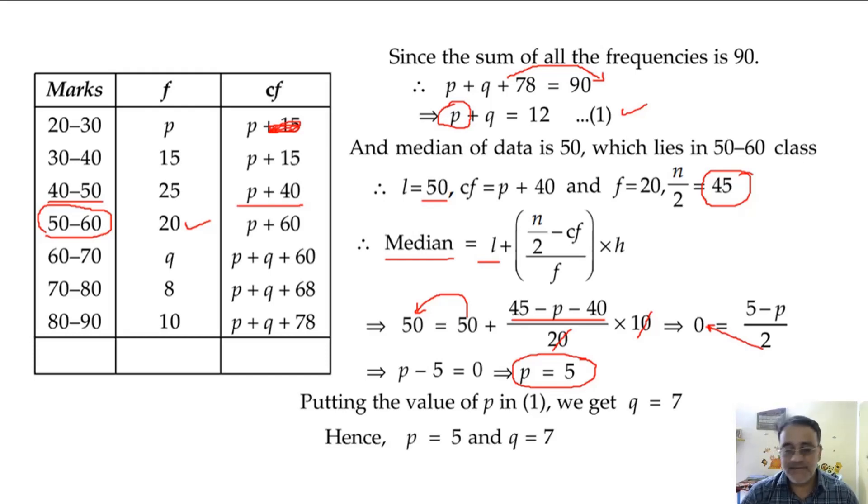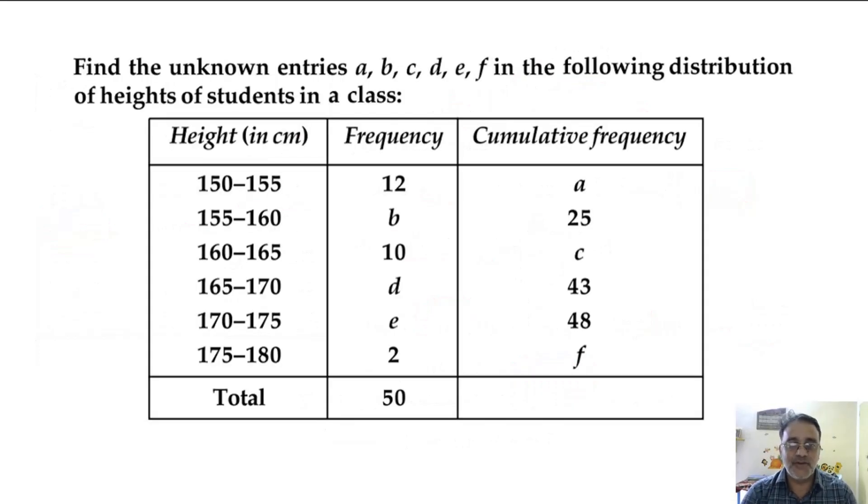Any doubt in this question? No sir. Okay, now we will move towards one very good question. Find the unknown entries a, b, c, d, e, f in the following distribution of the heights of students in a class.